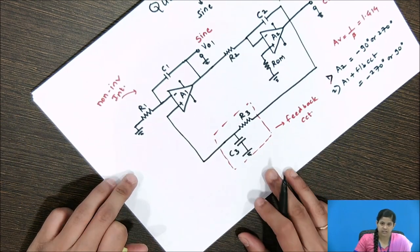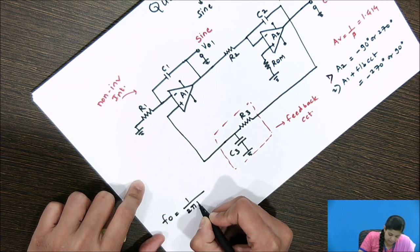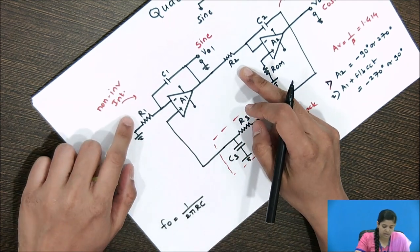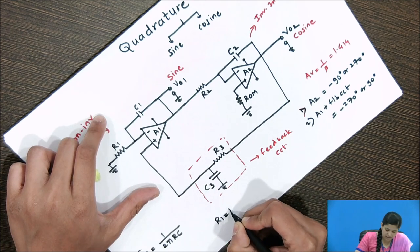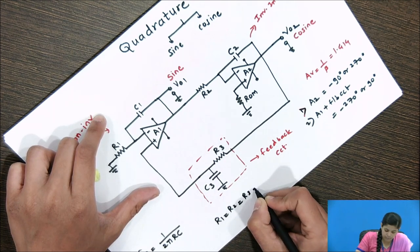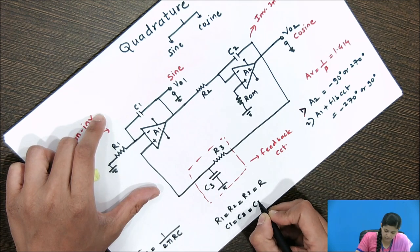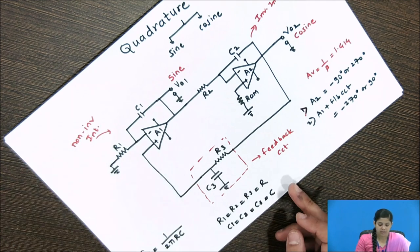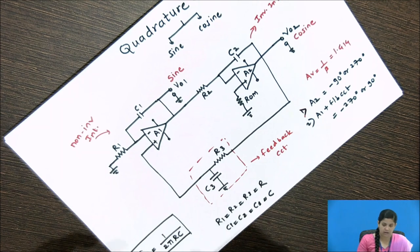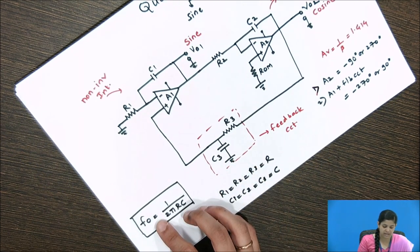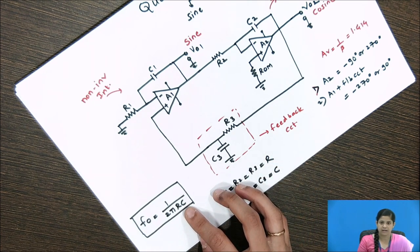The frequency of oscillation in this circuit can be calculated as FO = 1 / (2πRC), where resistors R1, R2, and R3 are all equal to R, and all capacitors are also equal in value. For a particular frequency, we can design the quadrature oscillator circuit by calculating the appropriate values of R and C.